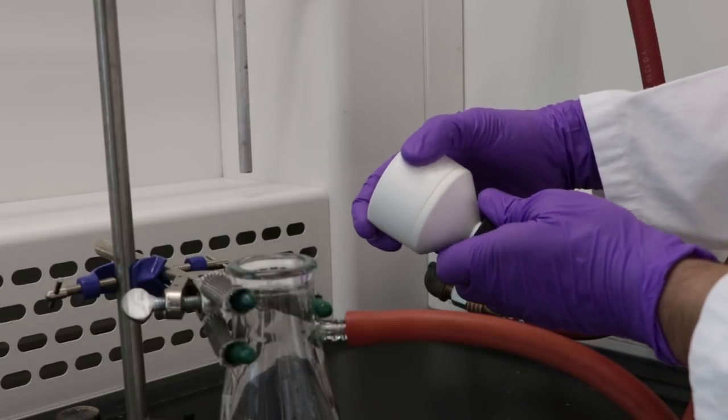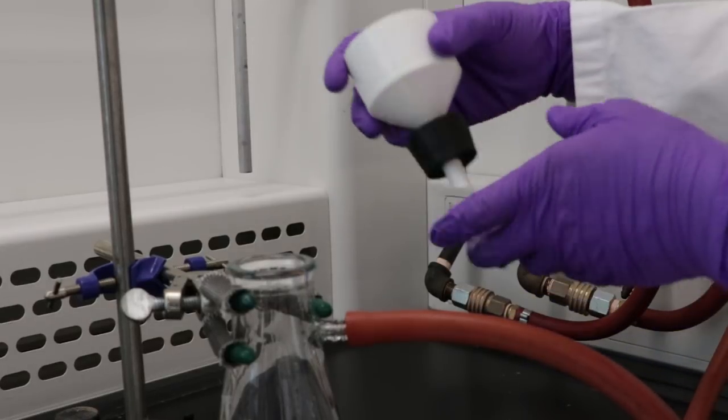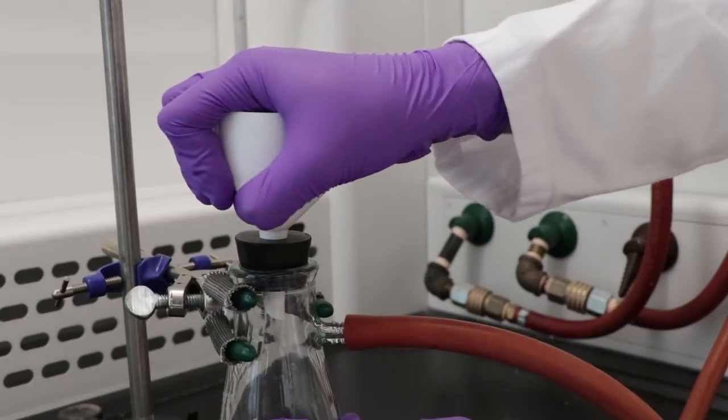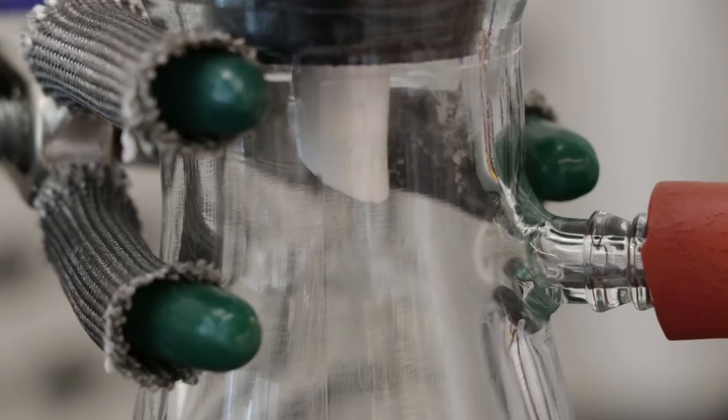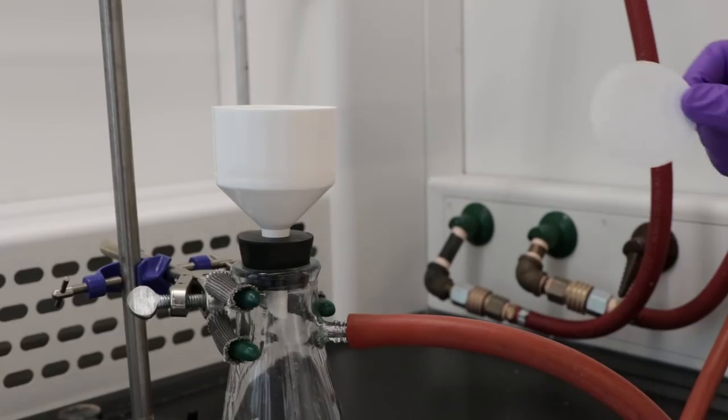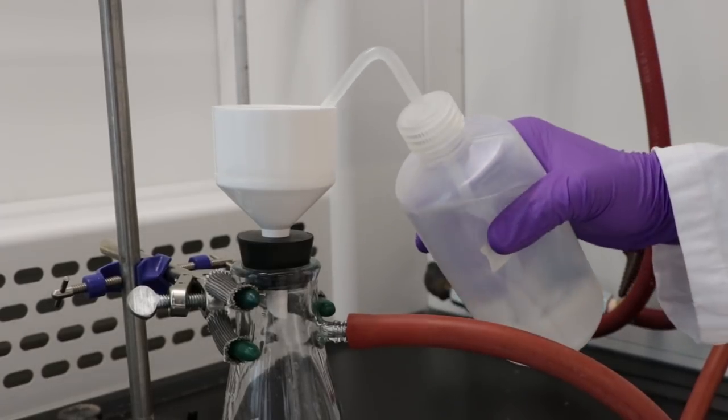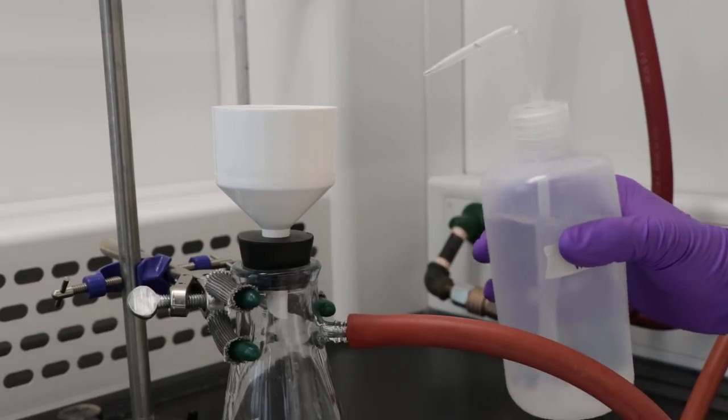Assemble the Buchner funnel. Secure to the top of the vacuum flask tightly. Make sure the funnel opening is pointing away from the vacuum. Place the filter paper in the top of the Buchner funnel and wet the edges to create a seal.